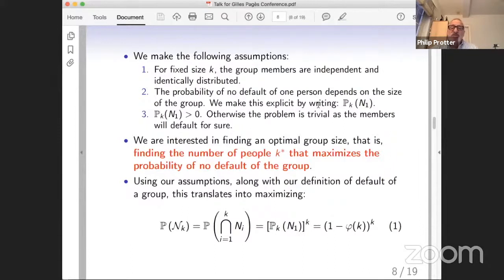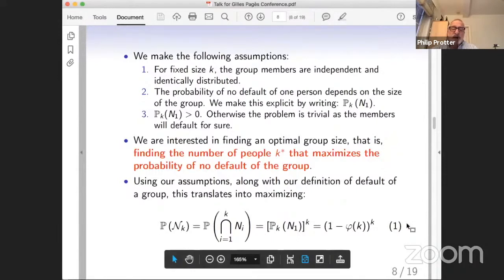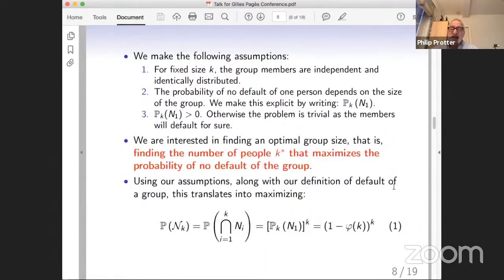We want to find the optimal group size, which means we want to find the number of people k star that maximizes the probability of no default in the group. Under these assumptions, along with our definition of default of a group, this translates into maximizing the quantity in equation one at the bottom of the screen, equation one, where you just take the intersection and you get (1 - φ(k))^k.